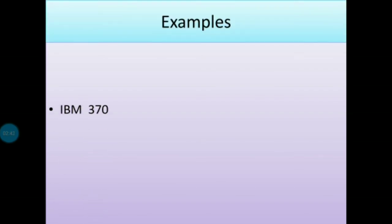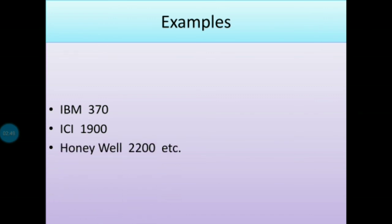What are the examples of third generation computers? The examples are IBM 370, ICL 1900, and Honeywell 2200, etc.